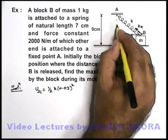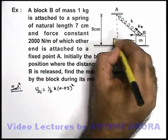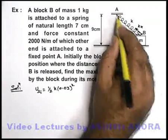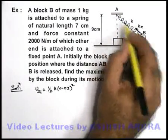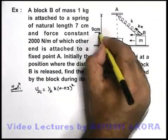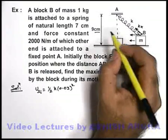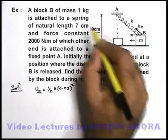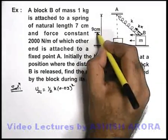We can see when the block will be in a position when it is vertically below the point A, the length of spring will be minimum. And this minimum length is 9 centimeters. That means at this stage also, the spring is elongated by 2 centimeters.